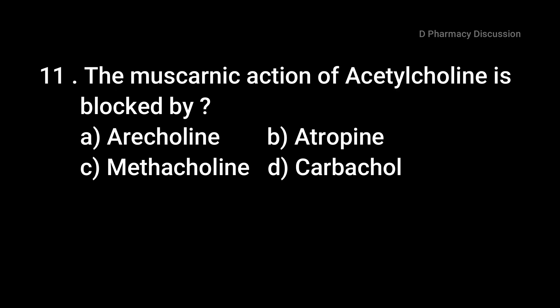Question number eleven: the muscarinic action of acetylcholine is blocked by — option A: aracholin, B: atropine, C: methacholine, and option D: carbachol. The correct answer is option B, atropine.